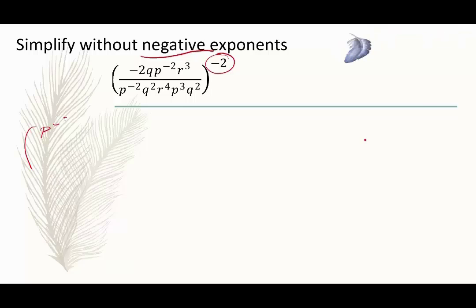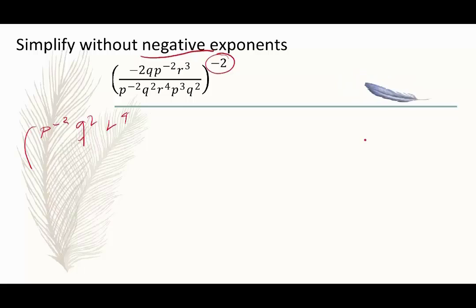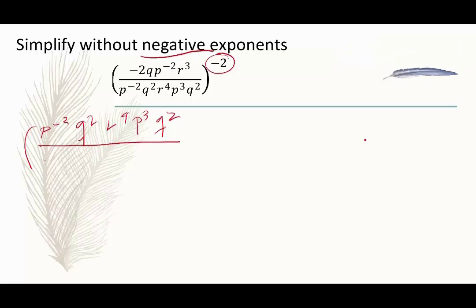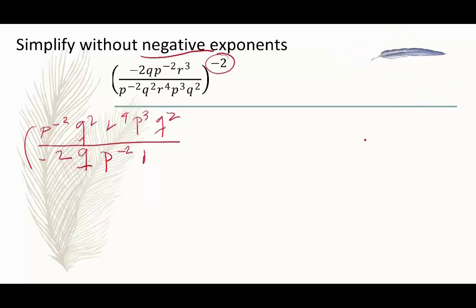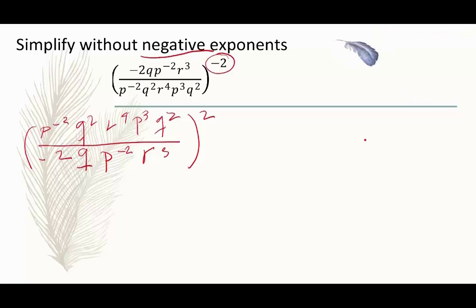This gives us p to the negative 2, q², r to the 4th, p cubed, q squared on the top. And on the bottom, negative 2, q, p to the negative 2, r cubed, and all of that is now to the positive 2, or squared.